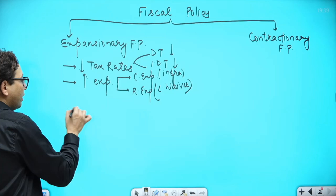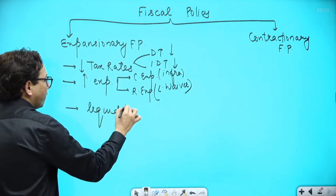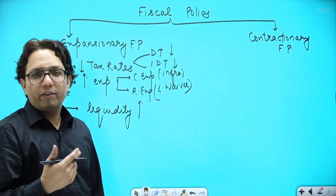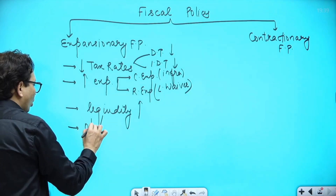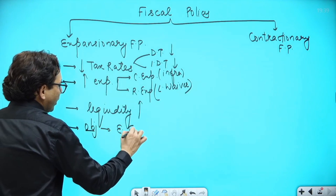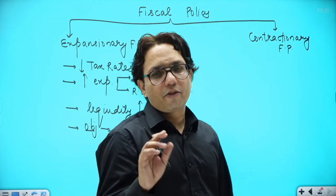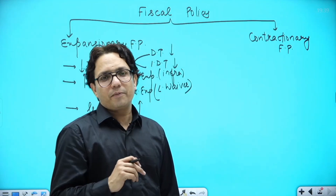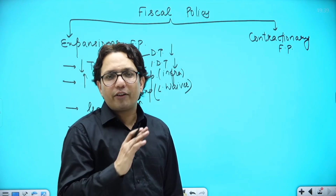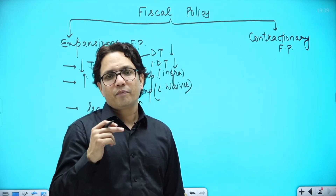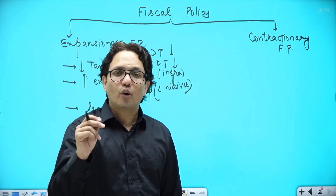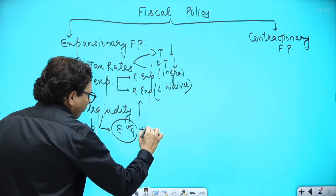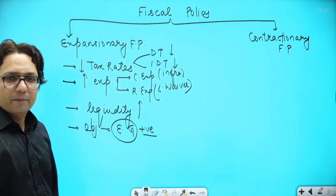Under expansionary fiscal policy, the liquidity in the economy increases. The objective of expansionary fiscal policy is to bring economic growth. If the economy is going through a downward phase, if there is a slowdown or recession, the government would follow an expansionary fiscal policy. Whenever the government gives a fiscal stimulus package, it is following an expansionary fiscal policy. So the objective and positive of this policy is economic growth.